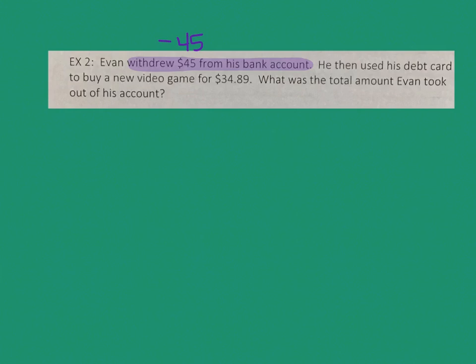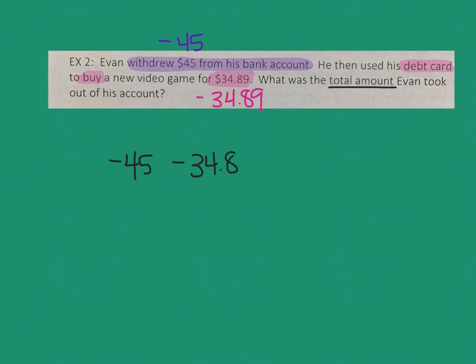The next number — he used a debit card. A debit card means you're using some of your money; you're buying stuff so you have less money. So that one is also going to be a negative: negative $34.89. At the end, it just wants to know what was the total amount that Evan took. Writing these two numbers down: I have negative 45 and negative 34.89.